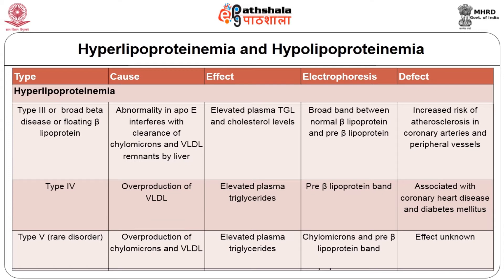Type 4 is due to the overproduction of VLDL, resulting in elevated plasma triglyceride levels. On electrophoresis, a pre-beta lipoprotein band is evident, associated with coronary heart disease and diabetes mellitus. Type 5, which is a rare disorder, is due to the overproduction of chylomicrons and VLDL, with elevated plasma triglyceride levels. On electrophoresis, chylomicrons and pre-beta lipoprotein band are observed, and the effect is unknown.